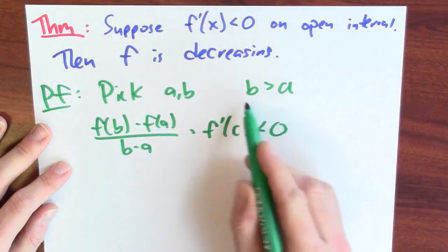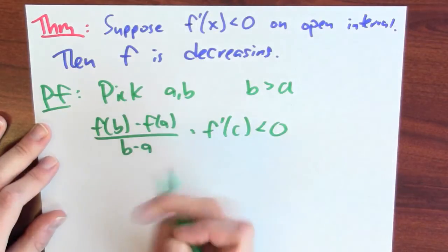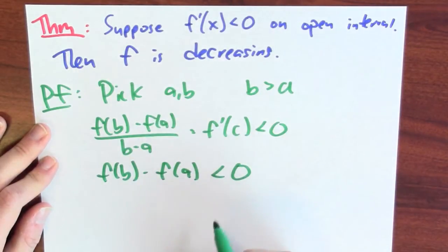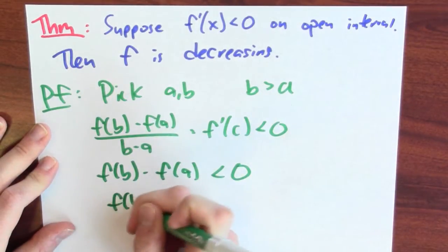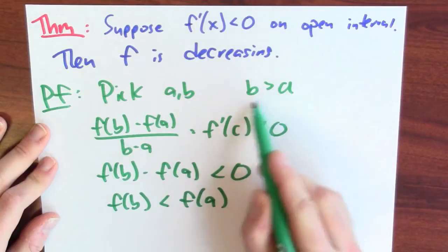Now B minus A is positive because B is bigger than A. So I've got a number divided by a positive number that is negative, which means F(B) minus F(A) must be negative. Adding F(A) to both sides, I conclude that F(B) is less than F(A) — in other words, F sends bigger inputs to smaller outputs. Since F sends bigger inputs to smaller outputs, F is a decreasing function. Once again, we're seeing that the mean value theorem lets me relate information about the derivative — the fact that the sign of the derivative is negative — back to information about the original function, namely that the function is decreasing.